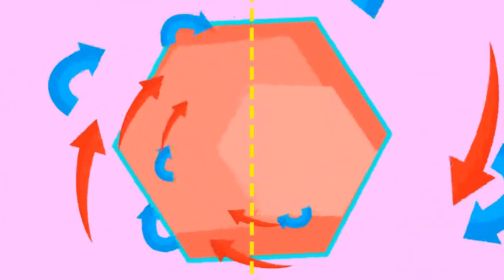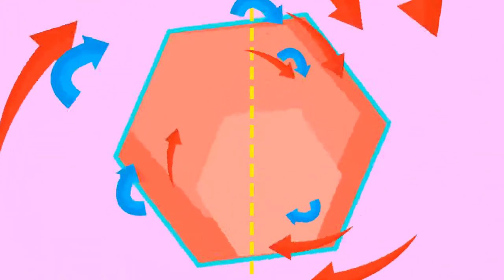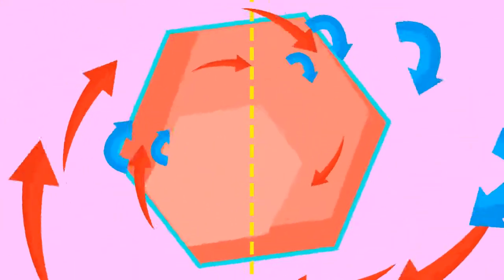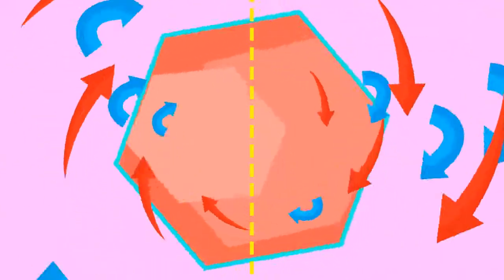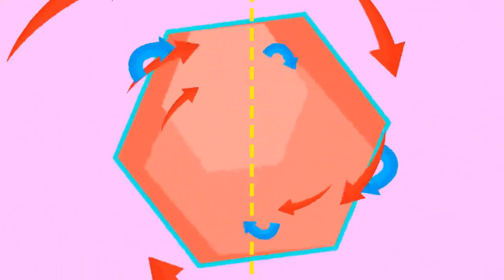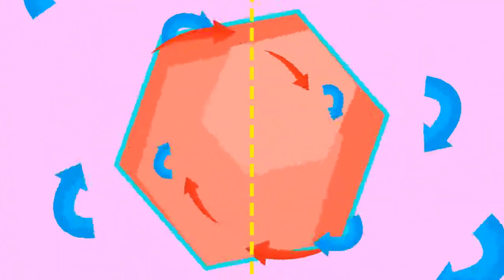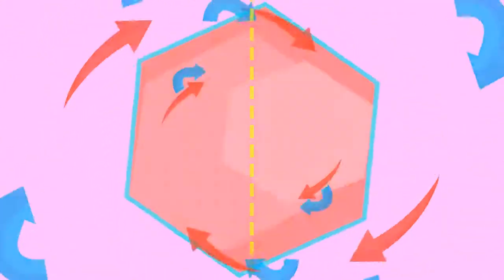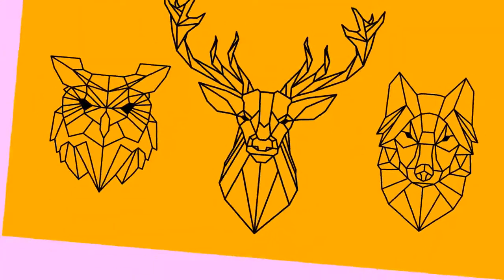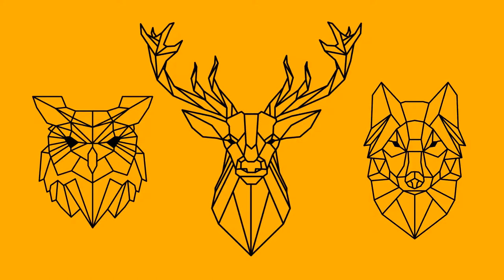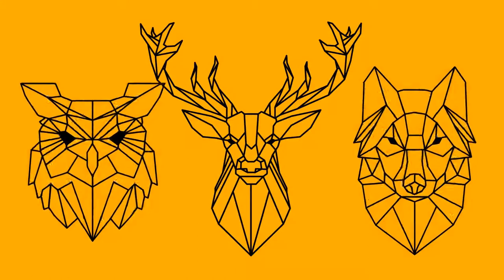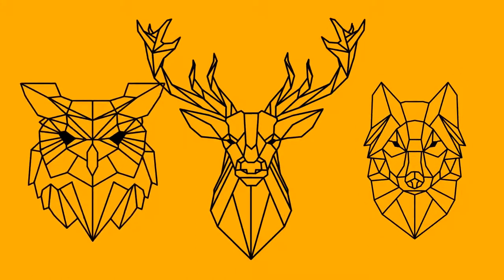Rotation symmetry is where a shape is turned around a fixed point so that it looks the same from different places. An irregular polygon does not have equal sides or angles. A compound shape is a shape that is made up of two or more basic shapes.